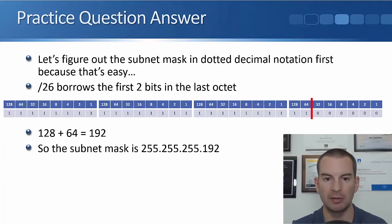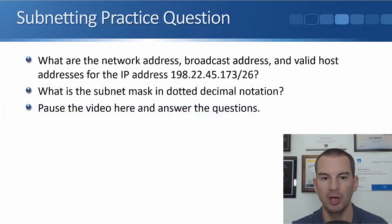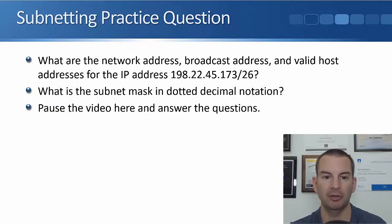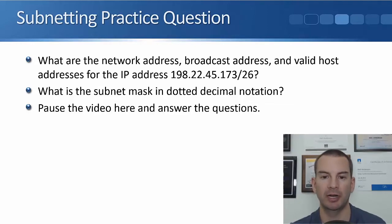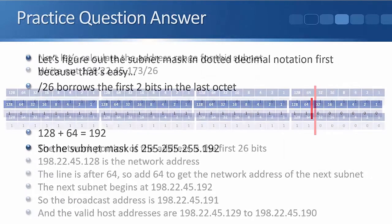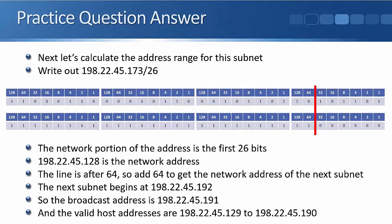Now let's look at the first part of the question: what is the network address, the broadcast address, and a valid host address for the IP address 198.22.45.173/26? Again, we use our piece of paper and we write out the IP address in binary. You can see I've done it at the top — that is the bit pattern for 198.22.45.173, written in decimal.